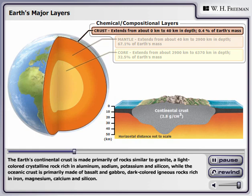The Earth's continental crust is made primarily of rock similar to granite—a light-colored crystalline rock rich in aluminum, sodium, potassium, and silicon—while the oceanic crust is primarily made of basalt and gabbro, dark-colored igneous rocks rich in iron, magnesium, calcium, and silicon.